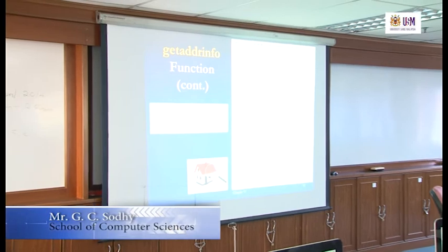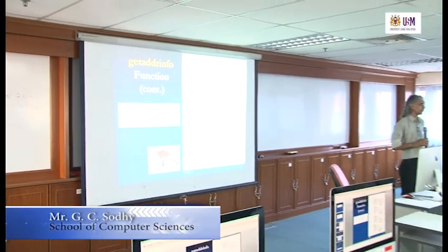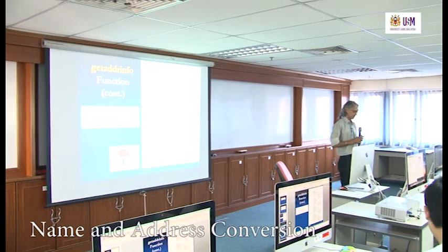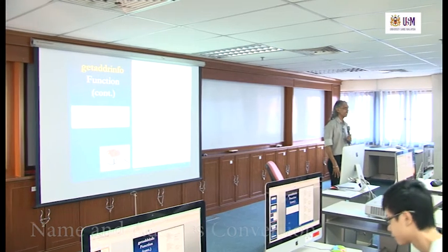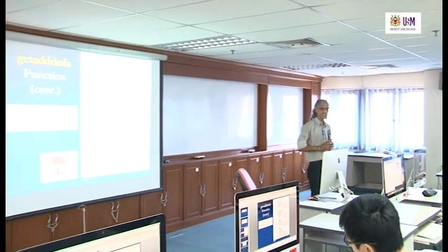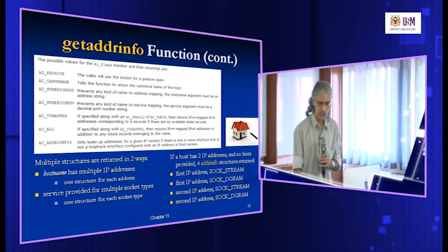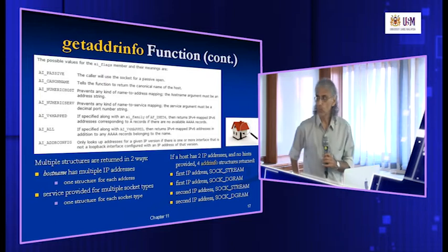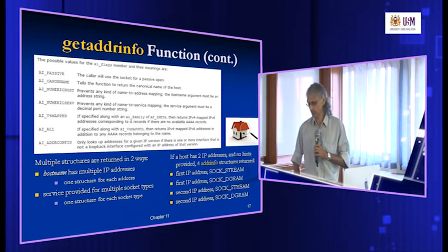We were talking about DNS yesterday. DNS is about the client program that can connect to the server using the server's host name, and then there's a conversion function which contacts the DNS server and converts the host name to the IP address. We've seen two types: getHostByName and getServiceByName — one converts the host name into IP address, the other converts the service name into a port number. Now the other option is to use getAddressInfo, which combines both the name-to-address and service-to-port conversions in one function.